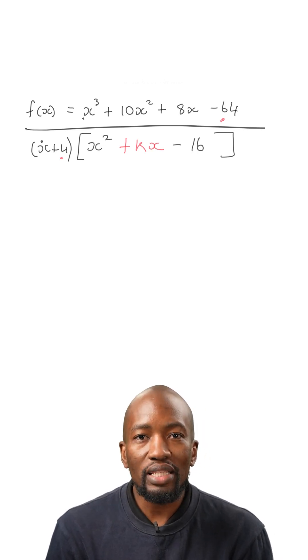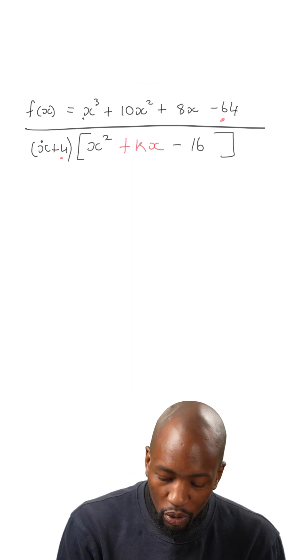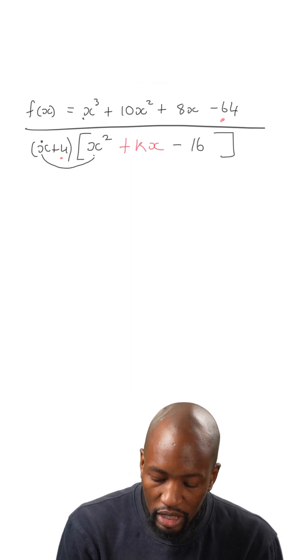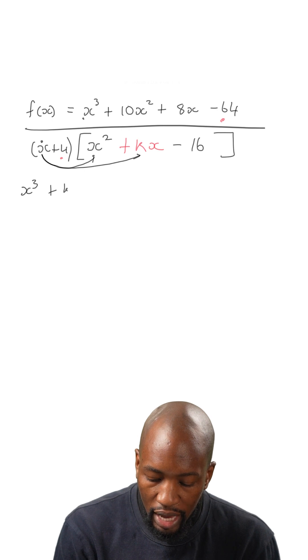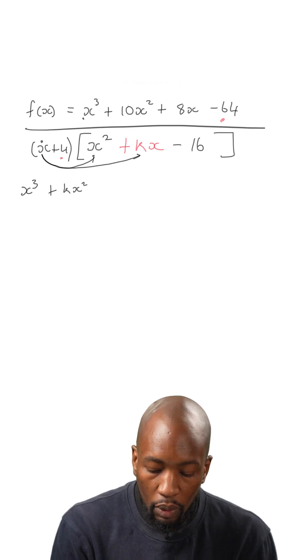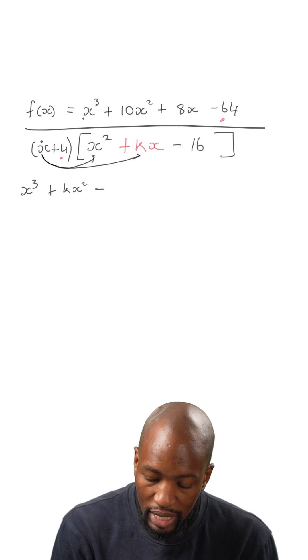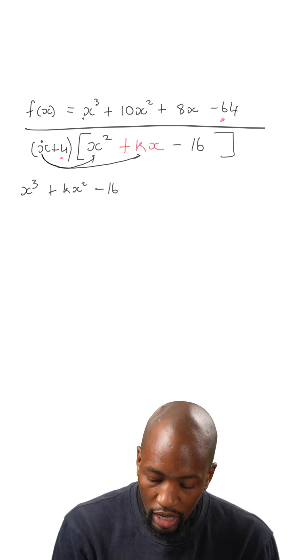Now what we need to do is, we need to multiply out. So if I multiply x with x squared, that is going to give me x to the power of 3. Then I'm going to multiply x with kx. That is going to give me plus kx squared. Now we need to multiply x with the last term, which is going to give me negative 16x.